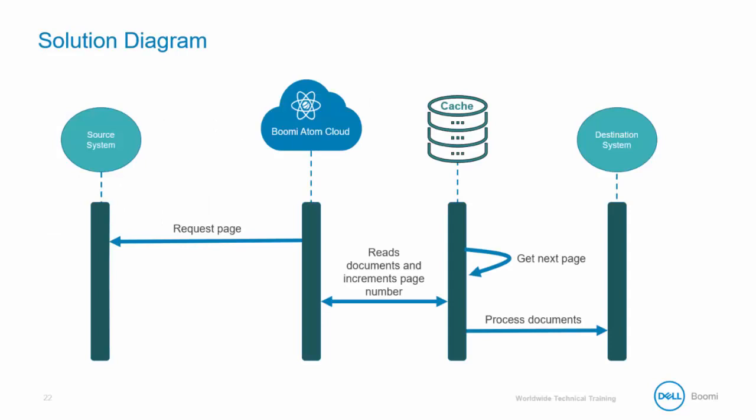The source application sends a message to a Boomi process endpoint. The Boomi process persists the message in a data store — this will be a queue or a database — and returns acknowledgement to the sending source application. Another Boomi process runs periodically, reads the data store, and attempts to send a message to a target system. On failure, the Boomi process retries the message send.